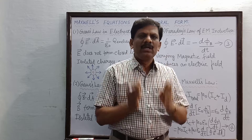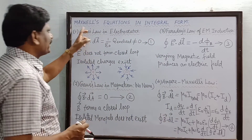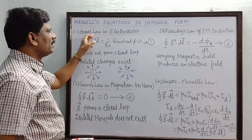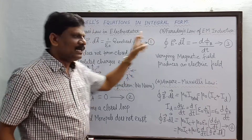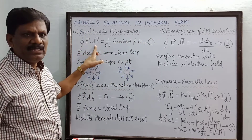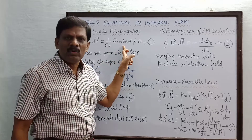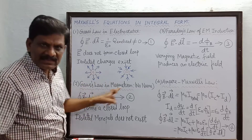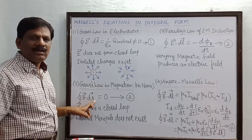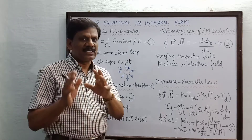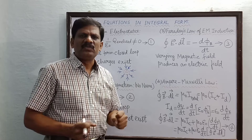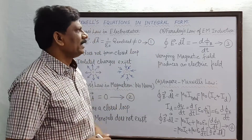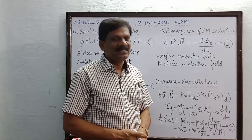So what are the four equations called Maxwell's equations in integral form? The first equation is Gauss law in electrostatics: closed integral E dot dA equals one by epsilon naught times Q enclosed, which is not equal to zero. The second equation is Gauss law in magnetism: closed integral B dot dA equals zero — this clearly shows no individual north pole or south pole can exist.